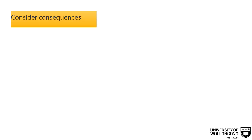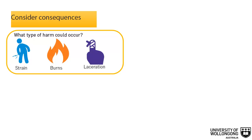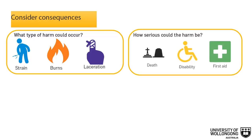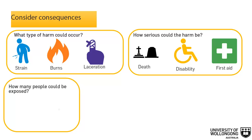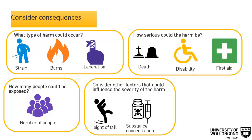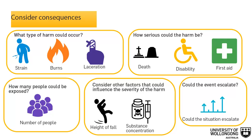When looking at consequences, you need to consider the following: what type of harm could occur, how serious could the harm be — could the hazard cause death, serious injuries, illness, or only minor injuries requiring first aid treatment? How many people are exposed to the hazard, and how many could be harmed inside and outside your workplace? What factors could influence the severity of harm, for example the distance someone might fall, or the concentration of a particular substance? Could a small event escalate to a much larger event with more serious consequences?